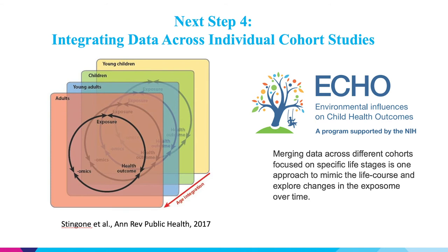We want to accelerate our ability to look at this, and if we start building a cohort right now starting in pregnancy and following over the life course, it's going to take a huge amount of time and be extremely expensive. But there is a program — the ECHO program through the NIH — that has asked investigators like the cohorts we talked about here and is merging them with other cohorts across the country, so we can accelerate standing up a cohort that stretches across the life course, not just focusing on early life.